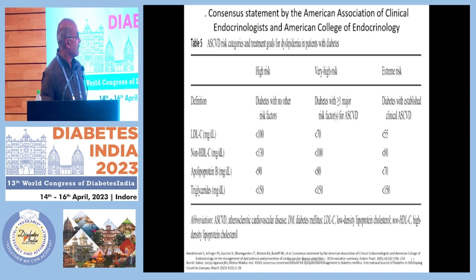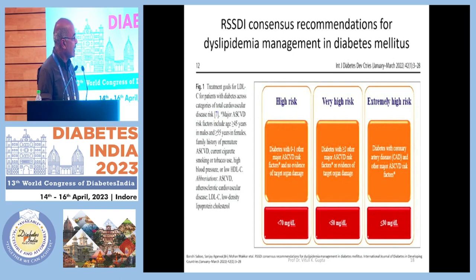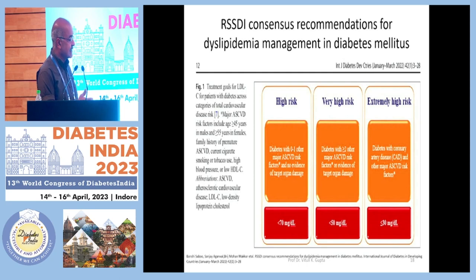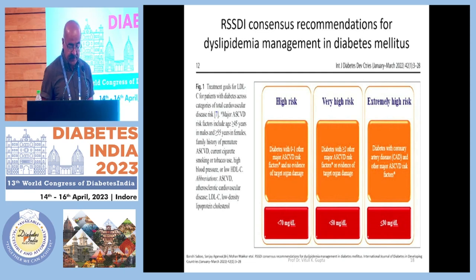For LDL-C targets: high-risk is less than 100, very high-risk is less than 70, and extremely high-risk is now targeting less than 55. Under the RSSDI Indian consensus statement, we have lowered these targets further: high-risk is less than 70, very high-risk is less than 50, and extremely high-risk is less than 30. That is the key difference between Indian and Western guidelines — we have lower LDL-C targets.